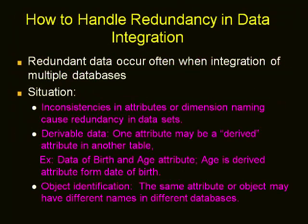The reason for differing values may be due to different representations — for example, metric units in one source and British units in another, but both represent the same kind of data. Redundant data is an important issue during data integration. Inconsistencies in attribute and dimension naming can also cause redundancies. If an attribute is derived from other attributes, it is called redundant — for example, age can be derived from date of birth. To detect such redundancies, we use the concept called correlation analysis.